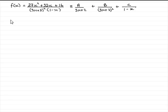So how are we going to do it? What I would always do with partial fractions is always multiply both sides of your identity by whatever you see in the denominator here. So what I'm going to do is multiply each of these fractions here by 3x plus 2 squared and 1 minus x. And if I multiply this side by the denominator, it's just going to leave me with 27x squared plus 32x plus 16.